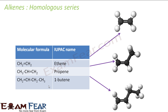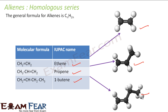So we talk about the homologous series of alkenes. I have ethene, I have propene, I have butene. These are my structures. The general formula of this homologous series is CnH2n. An alkane was CnH2n+2; here it is CnH2n.